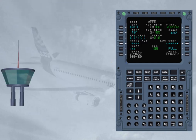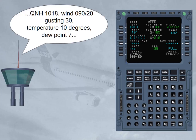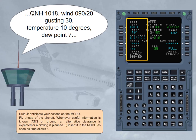Rule 4: Anticipate your actions on the MCDU — fly ahead of the aircraft. Whenever useful information is known, such as ATIS on ground, an alternative clearance is expected, or a circling is planned, insert it in the MCDU as soon as time allows.